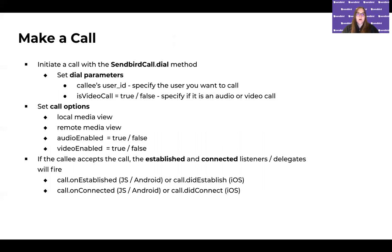Let's talk about the details of making a call. There's a dial method with parameters like the callee's user ID — this is the user you're going to call. You can specify whether it's a video call or an audio call. You can also specify call options, particularly for iOS and JavaScript, like the media view — what you're looking at — and the remote view you want to show on screen, and whether audio and video are enabled right when you're calling. Once the callee accepts the call, that's going to fire off the established and connected listeners, or in the case of iOS, delegates.